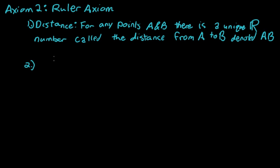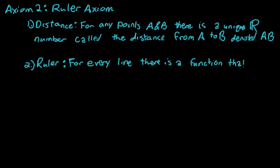And the second part of the axiom is the ruler part. This says that for every line, there is a function that is one to one and onto,